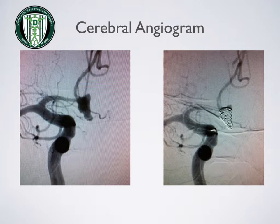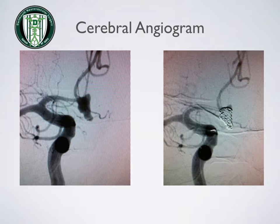There's also a therapeutic procedure where catheters, as you can see on the right, are placed into aneurysms and blood vessel malformations for treatment. Specifically on the right, a small catheter is placed into an anterior communicating artery aneurysm and coils are being placed into it to block off blood flow and cure.